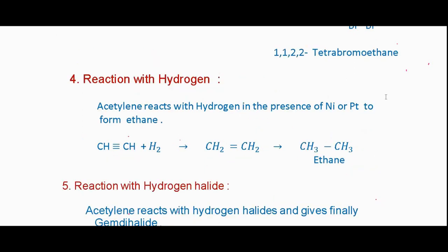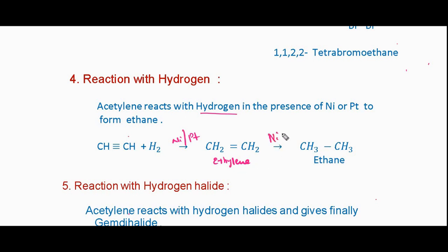The next chemical property is reaction with hydrogen. In the presence of nickel, platinum, or palladium, acetylene reacts with hydrogen. Addition of hydrogen across the triple bond first forms ethylene (alkene), and with excess hydrogen in the presence of nickel and platinum, it finally forms ethane.